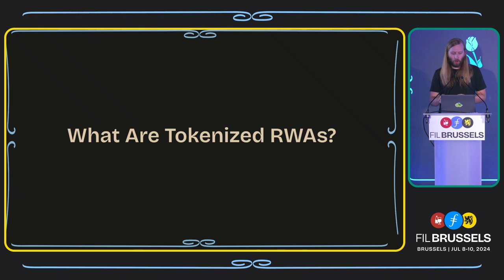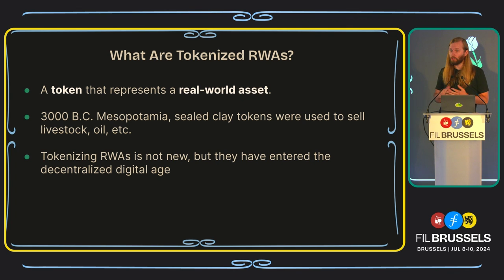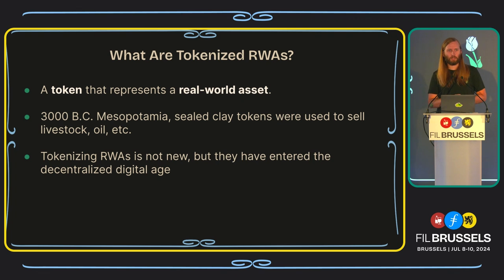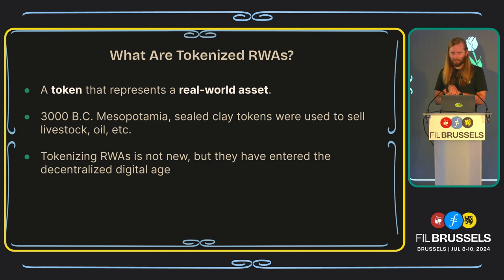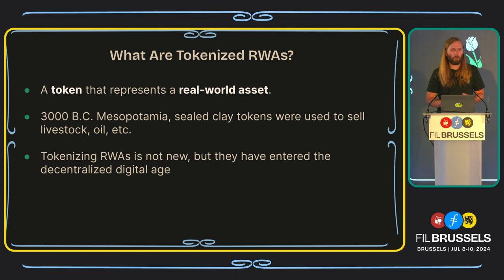So what are tokenized RWAs? It is a very simple concept — it is a token that represents a real-world asset. And this is not anything new. In 3000 BC in Mesopotamia, we had sealed clay tokens that were used to sell livestock and oil in marketplaces. That was a tokenized asset that would allow you to do trade and commerce in a much easier way than moving a bunch of cattle and taking them into town.